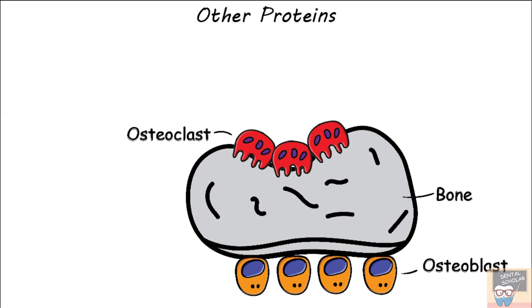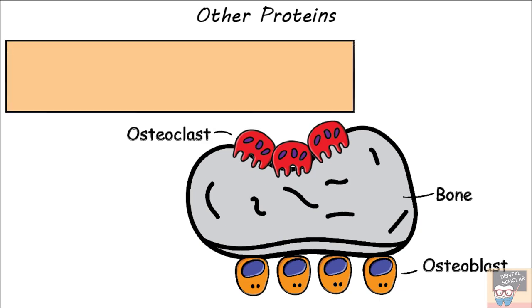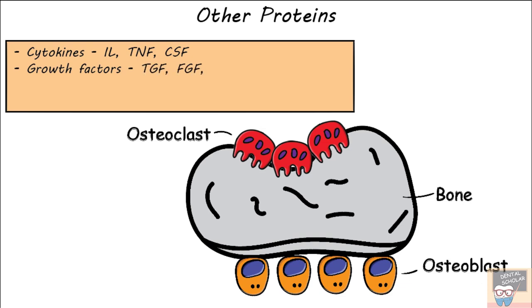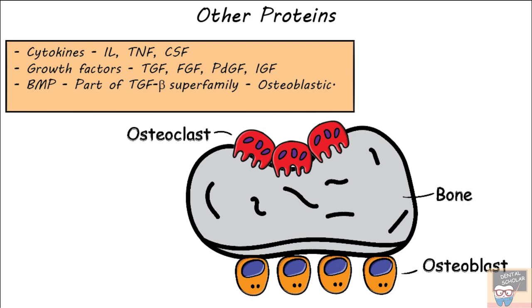Other exogenous proteins present in bone include: cytokines like interleukins, tumor necrosis factor, and colony stimulating factor; growth factors like transforming growth factor, fibroblast growth factor, platelet-derived growth factor, and insulin-like growth factor; and bone morphogenetic proteins (BMPs), which are part of the TGF-beta superfamily and are osteoblastic — having a role in bone formation. All of these exogenous proteins play a role in bone remodeling.